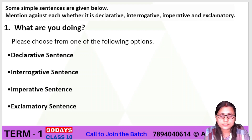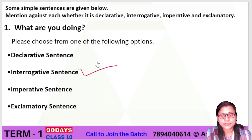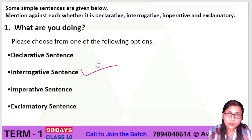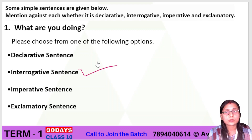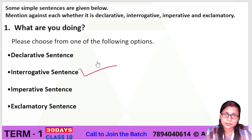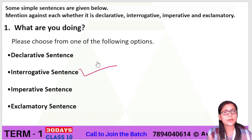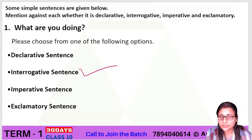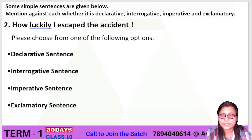All of you have given the right answer. The right answer is interrogative sentence. As we can see, 'What are you doing?' has a question mark at the end of the sentence. If a sentence ends with a question mark, it is an interrogative sentence. Now let's move on to the next question.